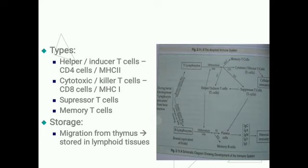Types of T lymphocytes: there are four varieties. Number one, helper cells, also known as inducer T cells or CD4 cells or MHC type 2. Second, cytotoxic T cells. Third, suppressor T cells. Fourth, memory T cells. After pre-processing, T lymphocytes migrate from the thymus and are stored in the lymphoid tissues.